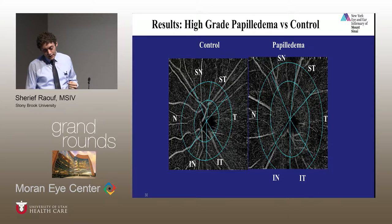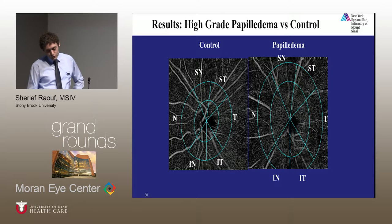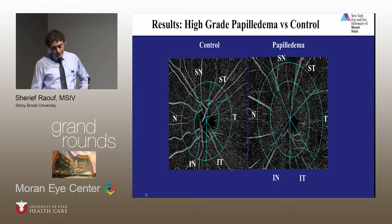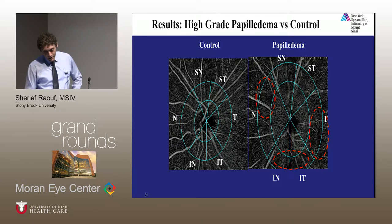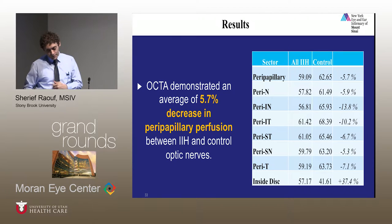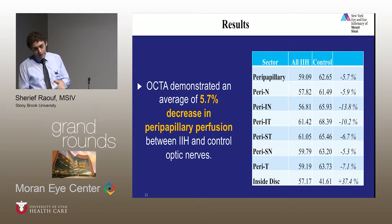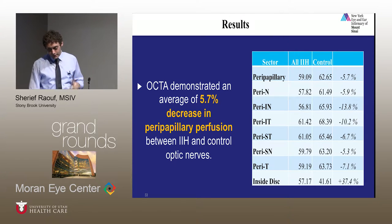Comparing a control to a high-grade papilledematous subject, there was a statistically significant decrease in RPC perfusion in high-grade papilledema versus controls, highlighting areas of dropout. The key take-home result is an overall peripapillary decrease of 5.7% in peripapillary perfusion between papilledematous and control optic nerves.